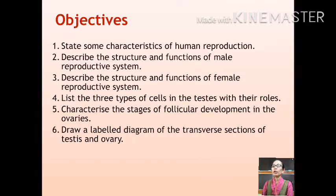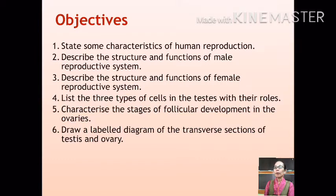2. Describe the structures and functions of the male reproductive system. 3. Describe the structures and functions of the female reproductive system. 4. List the three types of cells in the testes with their specific roles. 5. Characterize the stages of follicular development in the ovaries. And 6. Draw a labeled diagram to show the transverse section of testes and ovaries.